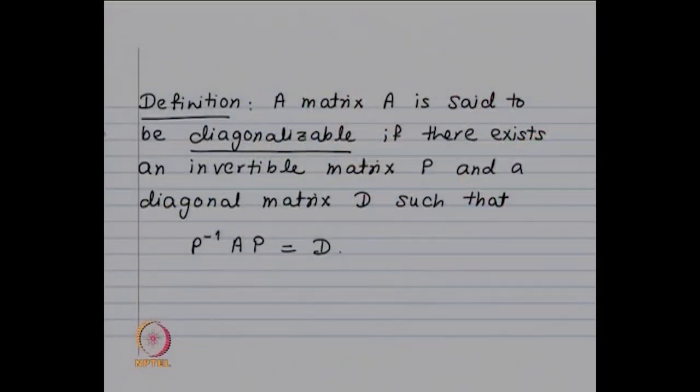If P inverse AP equals D, a diagonal matrix, such matrices are known as diagonalizable matrices. Given a matrix A, if you can find an invertible matrix P such that P inverse AP equals D, then A is called diagonalizable. Not all matrices are diagonalizable, so we are going to prove a characterization for diagonalizable matrices and then give a counterexample to show that not all matrices are diagonalizable.